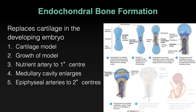The epiphysis — the bookends — are formed by a similar process, but not because the nutrient artery sends branches to those regions. They have their own arteries that pierce the cartilage model and deliver osteocytes and progenitor cells that allow bone to grow. Those are epiphyseal arteries. Epiphyseal arteries pierce the epiphyses, or the cartilage that will become the epiphyses, and the same procedure happens — the cartilage starts to calcify.